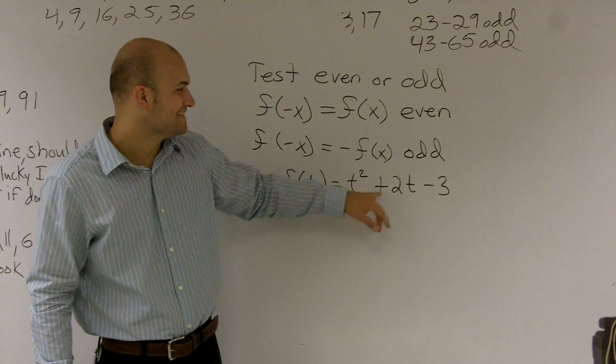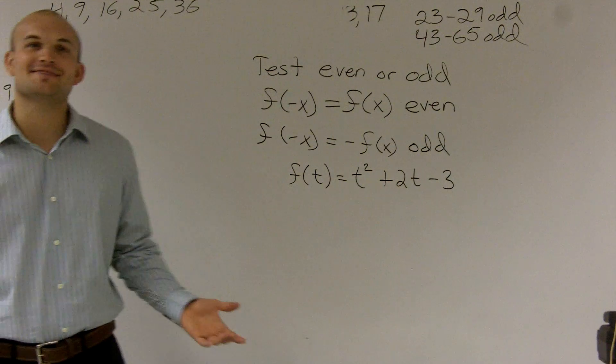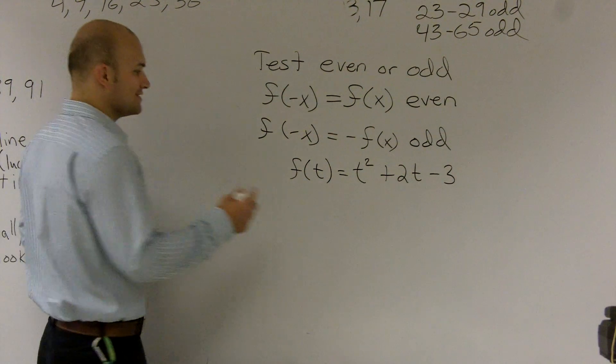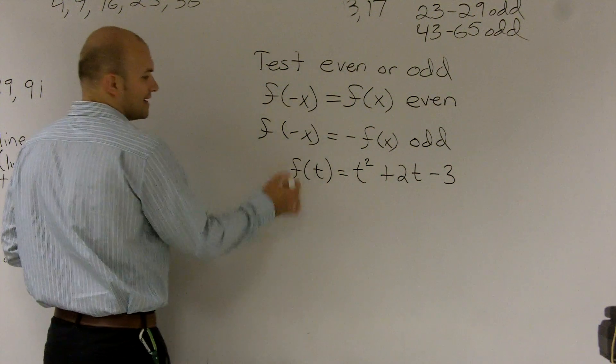So we have t squared plus 2t minus 3. So to go and test if it's even or odd, what you're going to do is you're going to plug in an f of negative t.